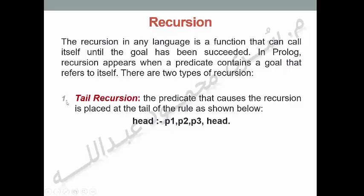النوع الأول: Tail recursion (العودة الذيلية). The predicate that causes the recursion is placed at the tail of the rule. يتم وضع البرديكيت التي تسبب العودة في ذيل الرول أي في نهاية الرول. Head وهي عبارة عن rule أو البرديكيت.